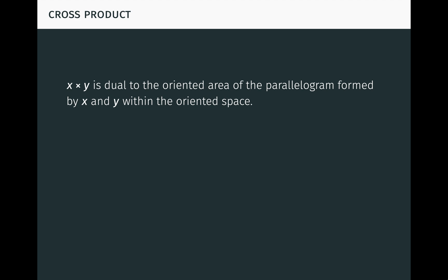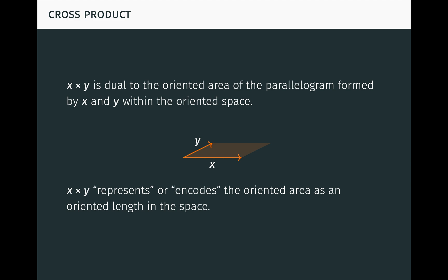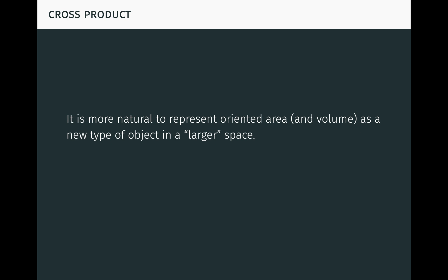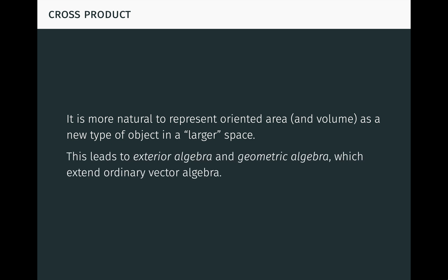By oriented area here, I don't just mean a positive or negative number. I mean a two-dimensional oriented geometric object, like a vector is a one-dimensional oriented geometric object. It can be visualized like this. Through duality, x cross y represents or encodes the oriented area as an oriented length in the space. It's not difficult to see that oriented area is an important concept — it arises in many theoretical and applied problems. So having a way to represent it as a vector which can be manipulated through algebraic operations is extremely useful. It's actually more natural to represent oriented area itself, and oriented volume for that matter, as a new type of object in a larger space. This idea leads to the subjects of exterior algebra and geometric algebra, which extend ordinary vector algebra. However, we're not going to enter into those in this video.